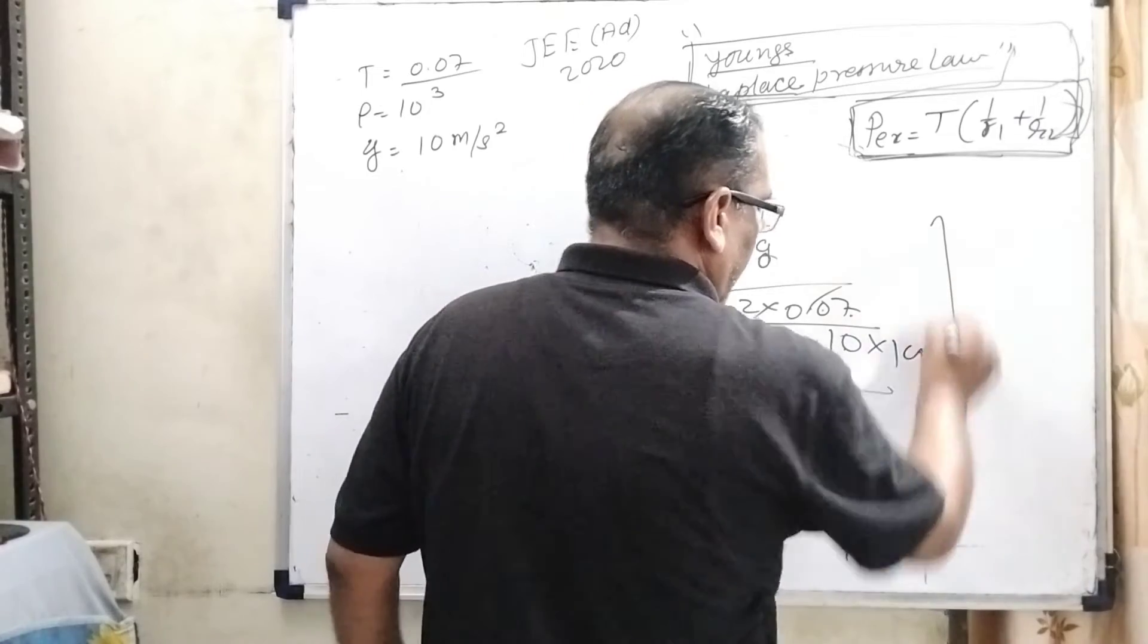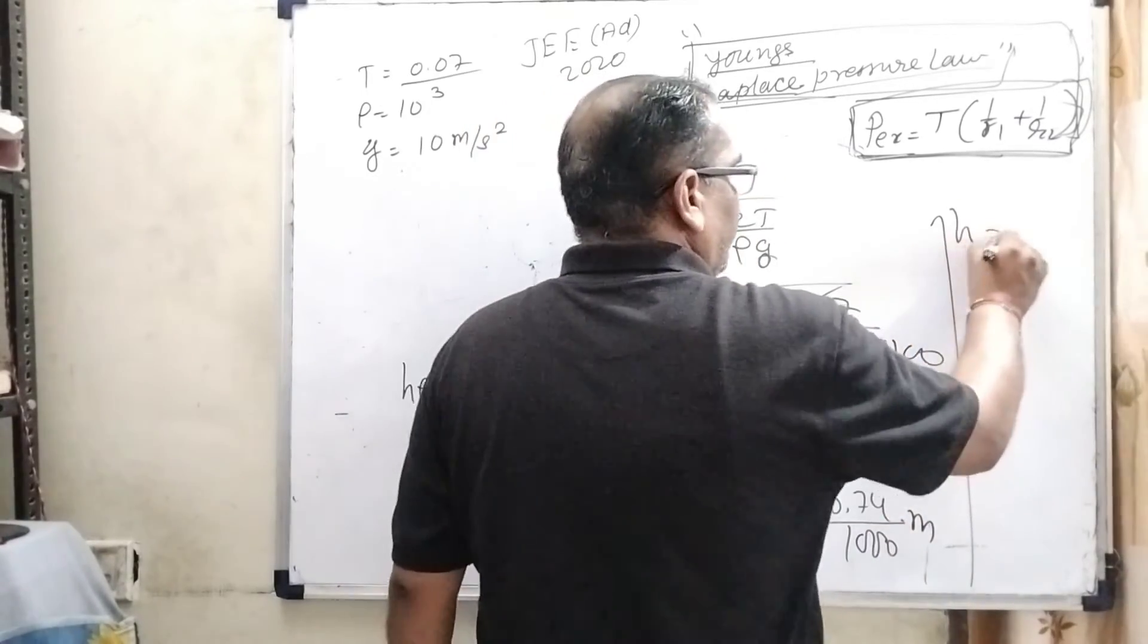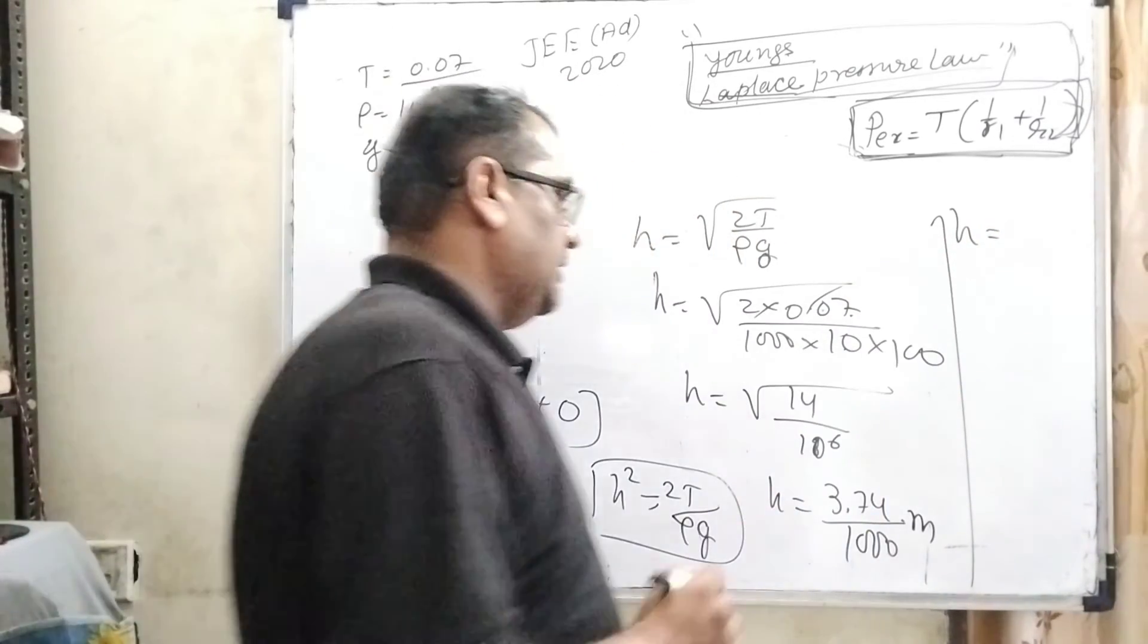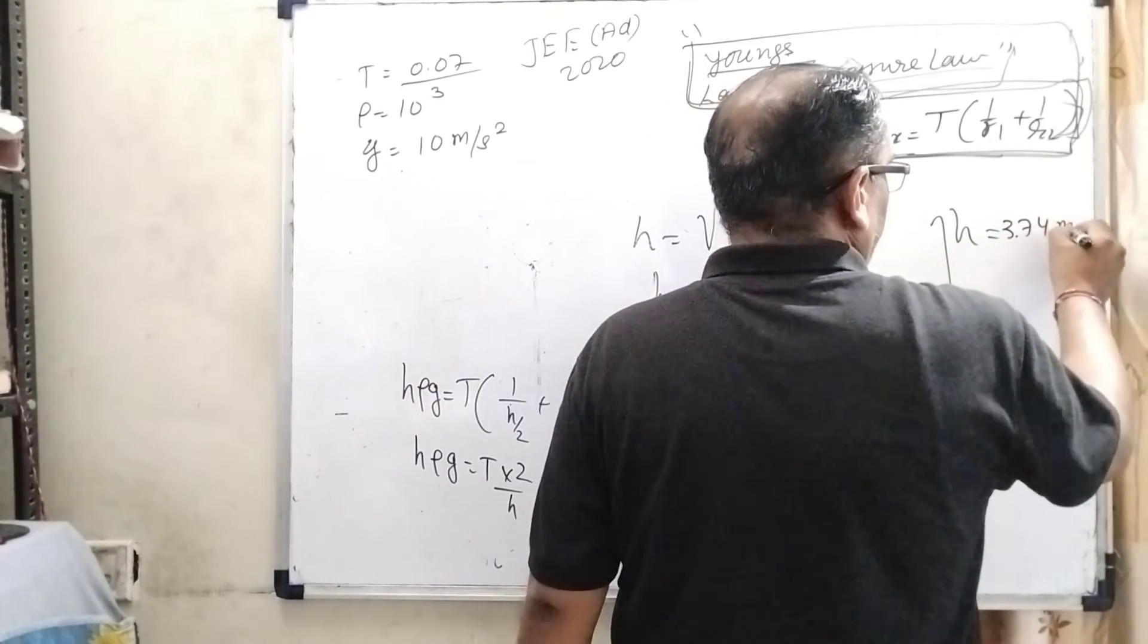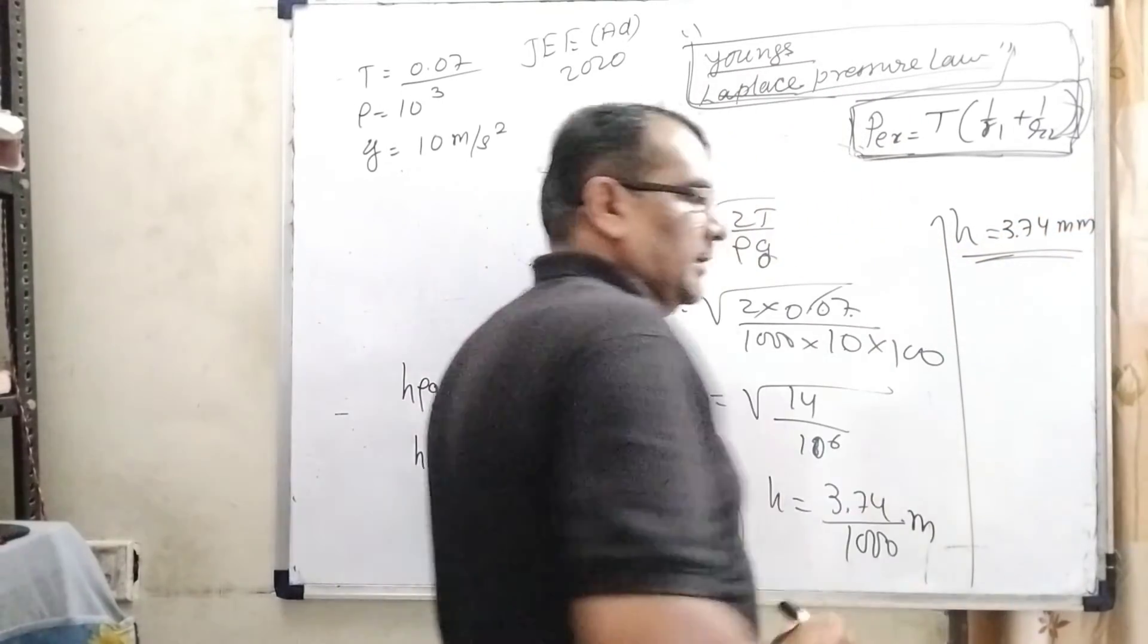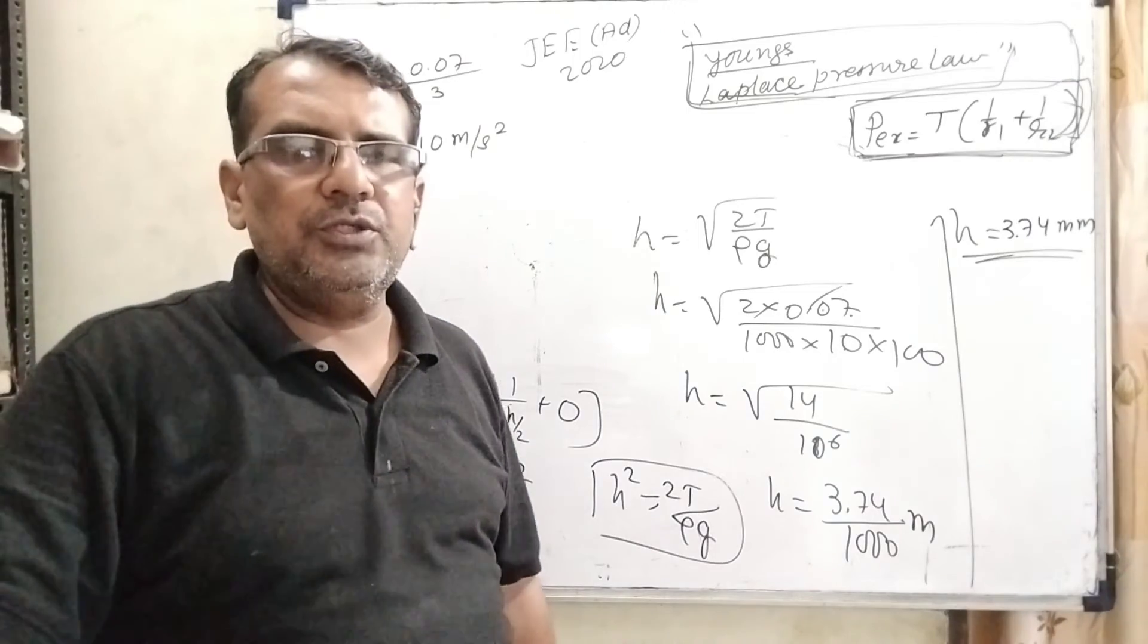It is in meter. But we have asked h in millimeter, so multiply by 1000 then 3.74 mm. It is the correct answer. I hope you understood this question.